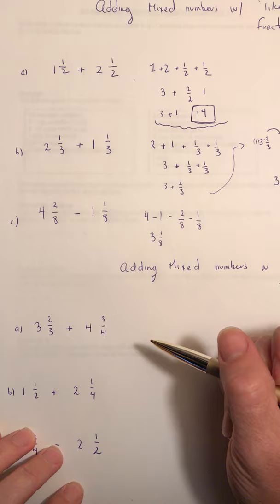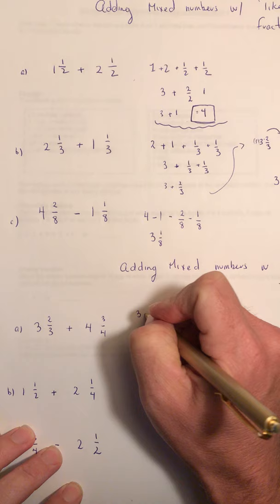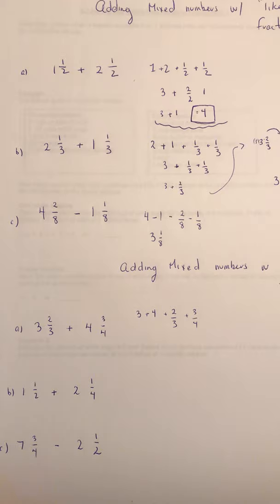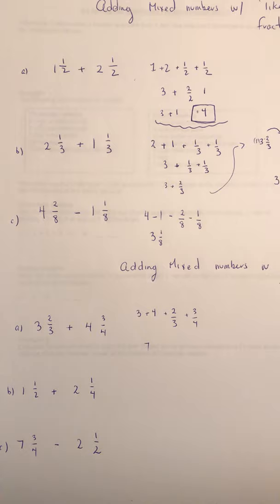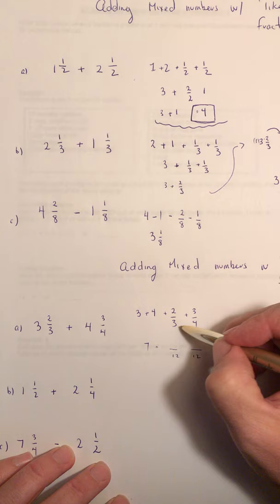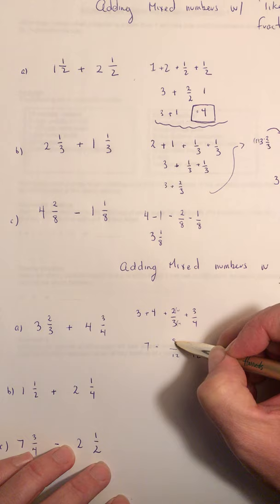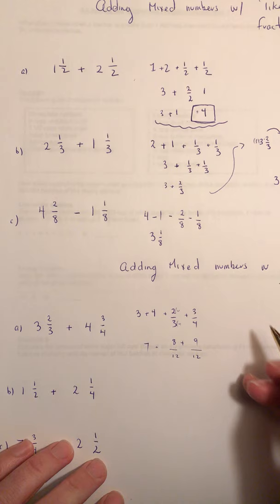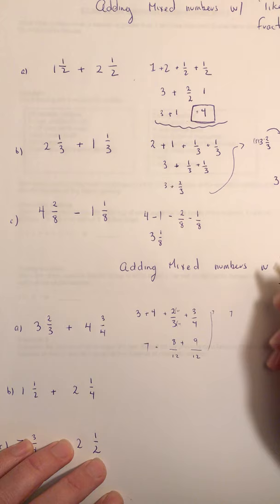Let's rearrange this question: three plus four plus two-thirds plus three-fourths. So we have seven, and now we need to deal with two-thirds plus three-fourths. We need a common denominator. Multiples of four: four, eight, twelve. Multiples of three: three, nine, twelve. So twelve is our common denominator. To get two-thirds up to twelfths, multiply by four: two times four is eight. To get three-fourths up to twelfths, multiply by three: three times three is nine. So we have eight plus nine over twelve, which is seventeen-twelfths.